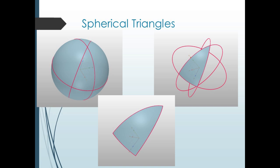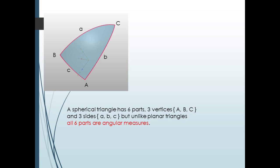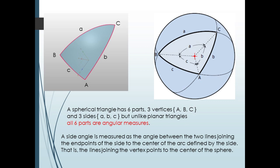We will only be working with spherical triangles where each interior angle is less than 180 degrees. Like planar triangles, a spherical triangle has six parts: three angles and three vertices. The key difference is that all six parts for a spherical triangle are given an angular measure. These sides are all segments of great circles, measured by the angle between the two lines joining the endpoints to the center of the arc — the same as the angle associated with the planar arcs in the plane containing the spherical side.